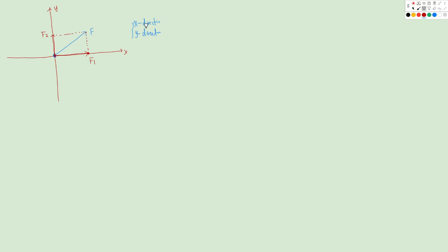If we know the magnitude of F is 12 Newton and the angle is 20 degrees, we can find F1's magnitude using trigonometry. F is the hypotenuse of a right triangle with the 90-degree angle at the foot of the perpendicular. So F1 equals 12 times cosine 20 degrees. For F2, since this is also a 20-degree angle in the triangle, F2 equals 12 times sine 20 degrees.